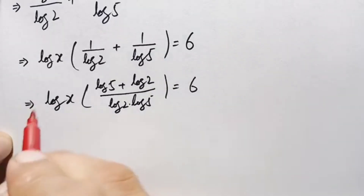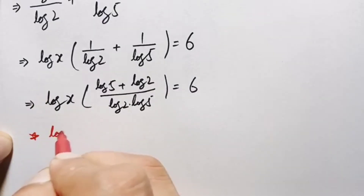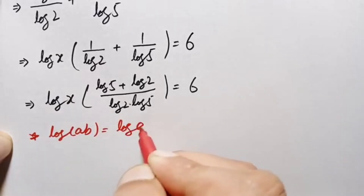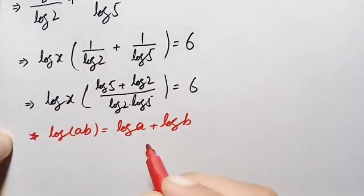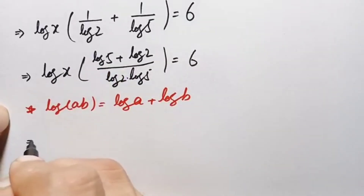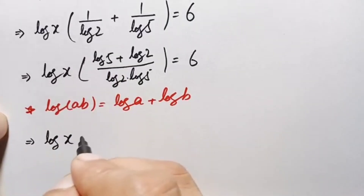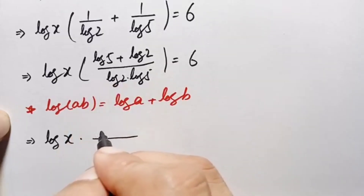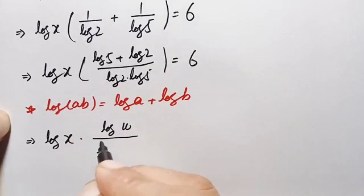In the numerator we will use another logarithm property: log of a plus log of b equals log of a times b. Using this property, the numerator log of 5 plus log of 2 becomes log of 5 times 2, which is log of 10.